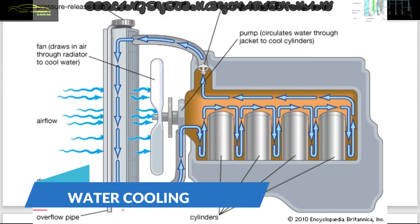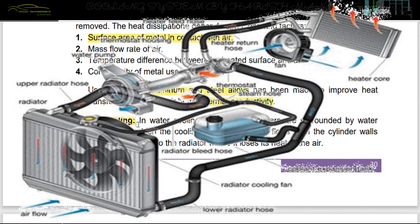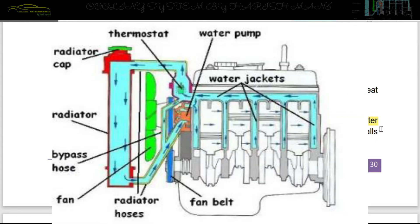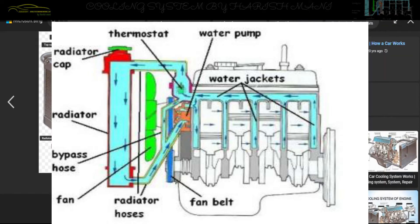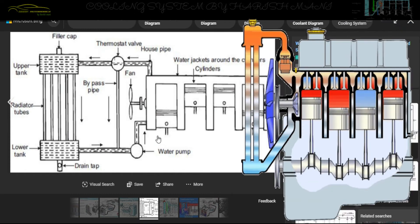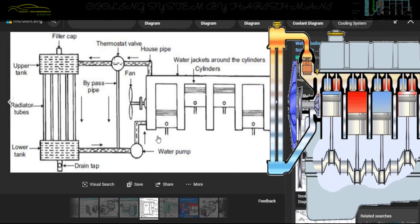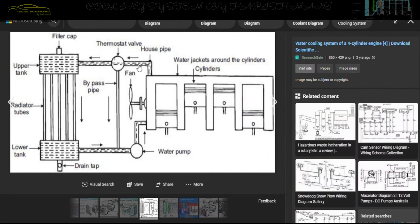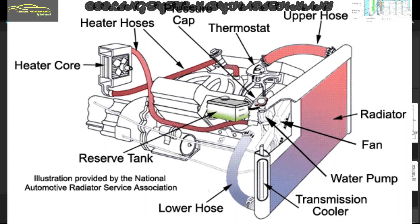Next is the Water Cooling System. The water cooling system is cooled by water. In the engine, the cylinder is surrounded by water. The water flows through the water jacket surrounding the cylinder. This is the engine. This is the cooling system — the water cooling system is used in the main area.